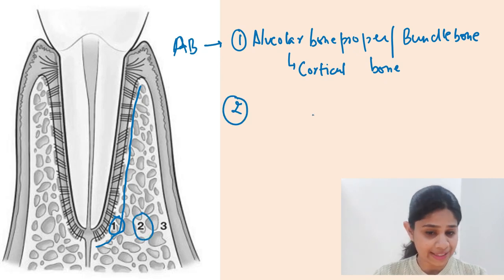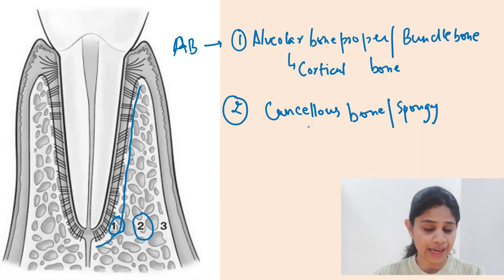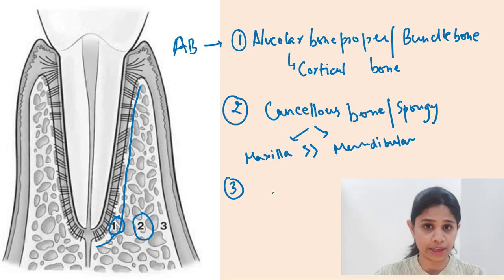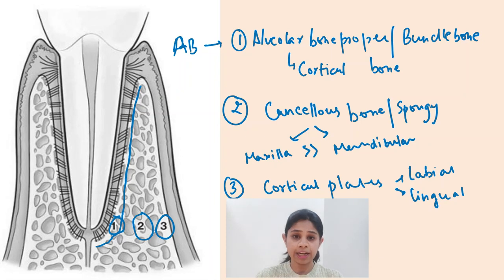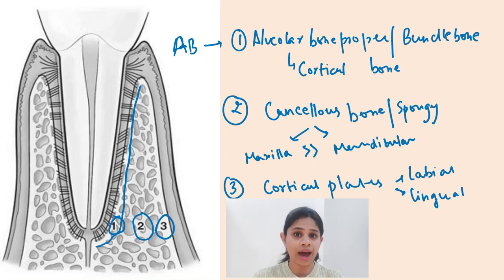The second layer is made up of cancellous bone, with features such as increased marrow spaces and the presence of trabeculae. In the maxilla, this second layer is present in increased quantity compared to the mandibular bone. The third layer is made up of the outer and inner cortical plates — the labial and lingual cortical plates. A layer of cancellous bone is sandwiched between the alveolar bone proper and the major cortical plates of the labial and lingual sides. All these components together form the alveolar bone.